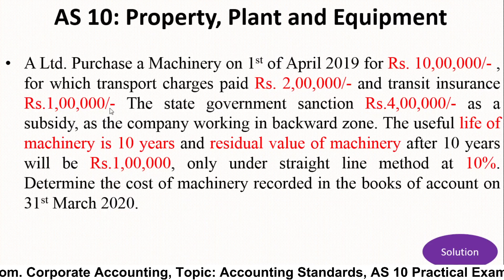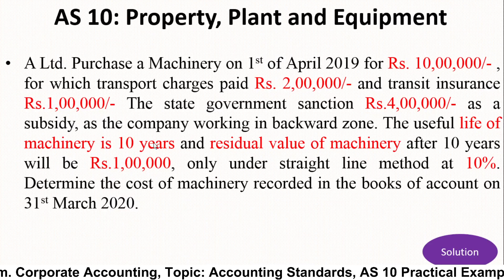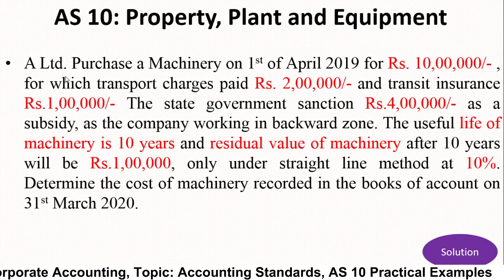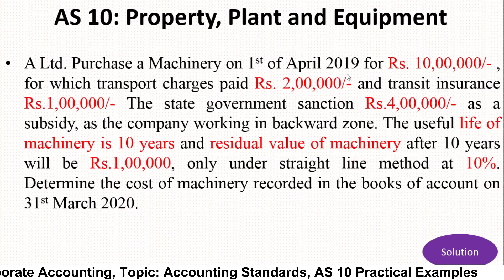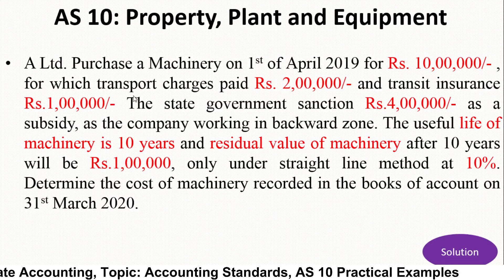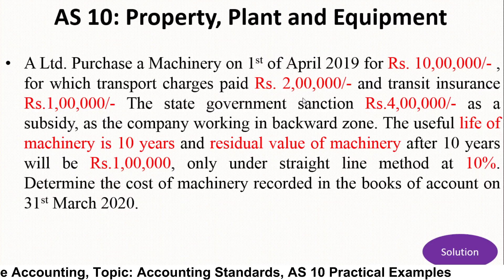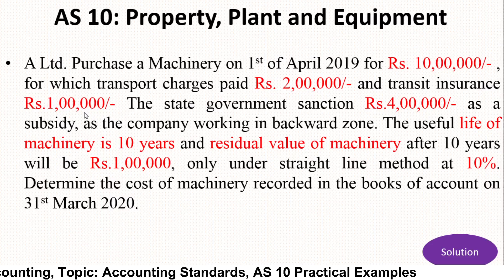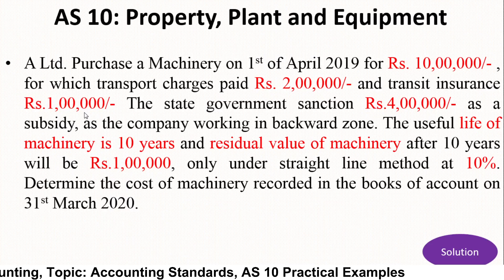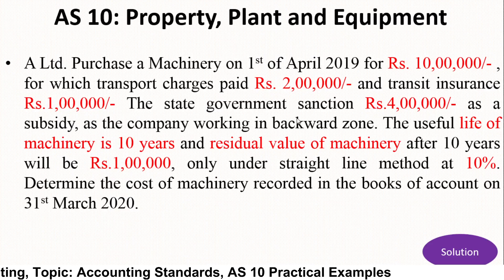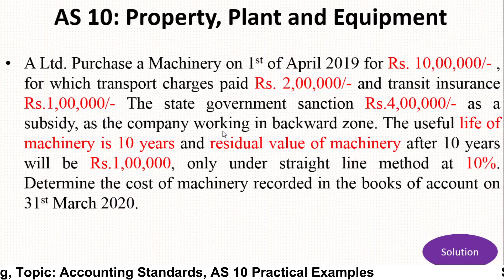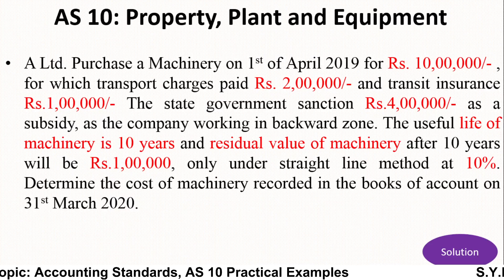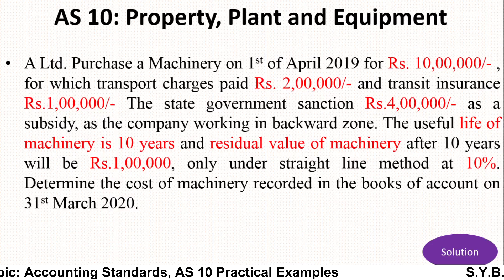The example is straightforward. A Limited purchased machinery for rupees 10 lakh — that is the cost. Transport charges of rupees 2 lakh have to be added to the cost, and transit insurance of rupees 1 lakh also increases the cost of the asset. The state government sanctioned rupees 4 lakh as subsidy, which must be deducted since the company is working in the backward zone.